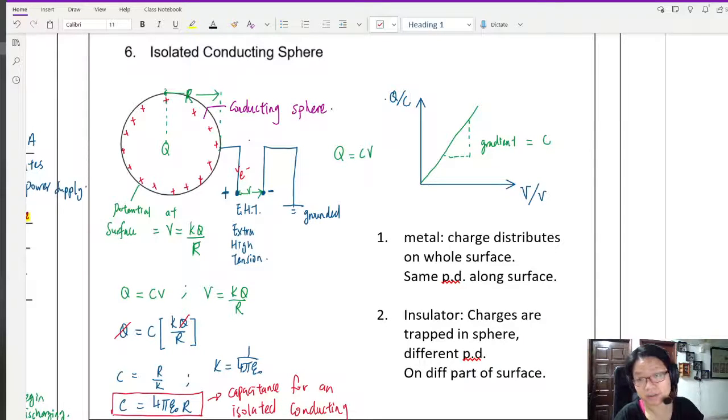Just to remind ourselves that when you have a metal sphere like this, the charge will distribute on the whole surface. So you have the same potential difference across every single point on the circuit. Whereas for an insulator, the charges are trapped in the sphere because the charges are not as mobile in an insulator. So you have different potential difference on different parts of the surface.